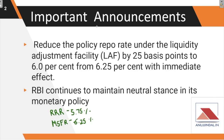RBI has decided to cut the policy repo rate under the Liquidity Adjustment Facility by 25 basis points, bringing it down from 6.25 percent to 6 percent. The repo rate is the rate at which the central bank of the country lends money to commercial banks. We'll now analyze this news and how it affects our economy.